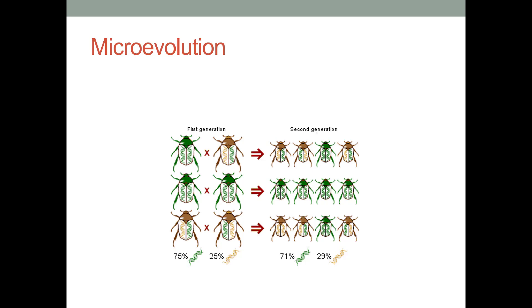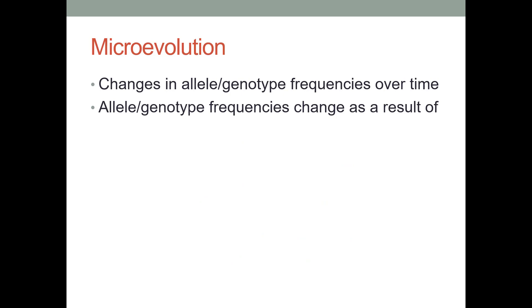Microevolution is basically the evolution or the change of allele frequencies over time. We're going to see how we can quantify that using something known as the Hardy-Weinberg Equilibrium. So changes in allele or genotype frequencies over time is what we mean by microevolution. Small changes adapting a population to an environment rather than big changes like speciation.